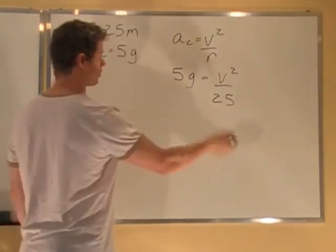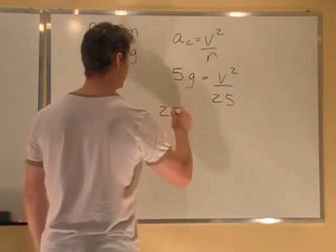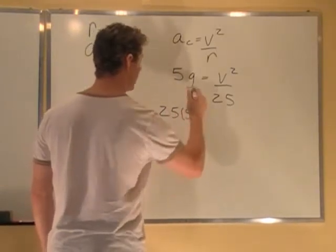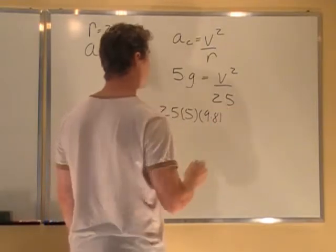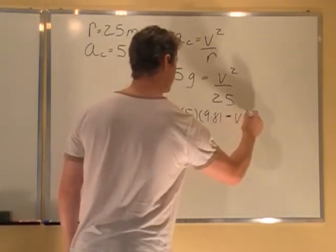So to start, we just multiply 25 over here. 25 times 5 times G of 9.8, and that's equal to V squared.